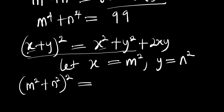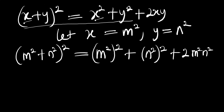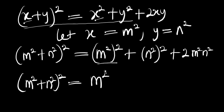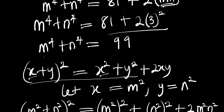Inserting into the identity, (m² + n²)² equals m⁴ plus n⁴ plus 2(mn)². So we have (m² + n²)² equals m⁴ + n⁴ plus 2 times (mn)².